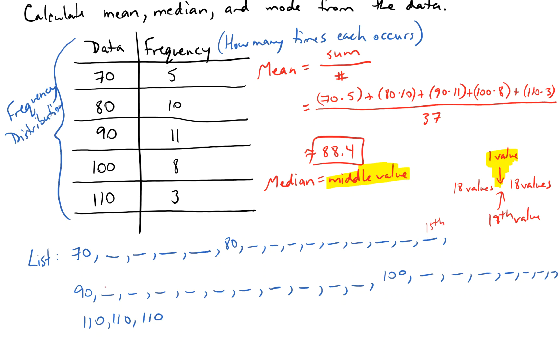So 90 is 16, 17, 18. Here's my 18th. And so my 19th value is this guy right here, which is a 90. So my median will be 90 in this problem, my 19th value.